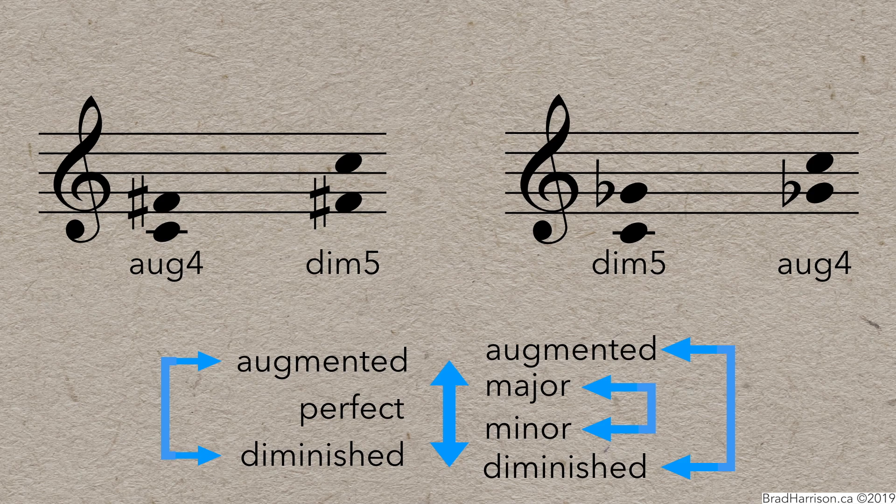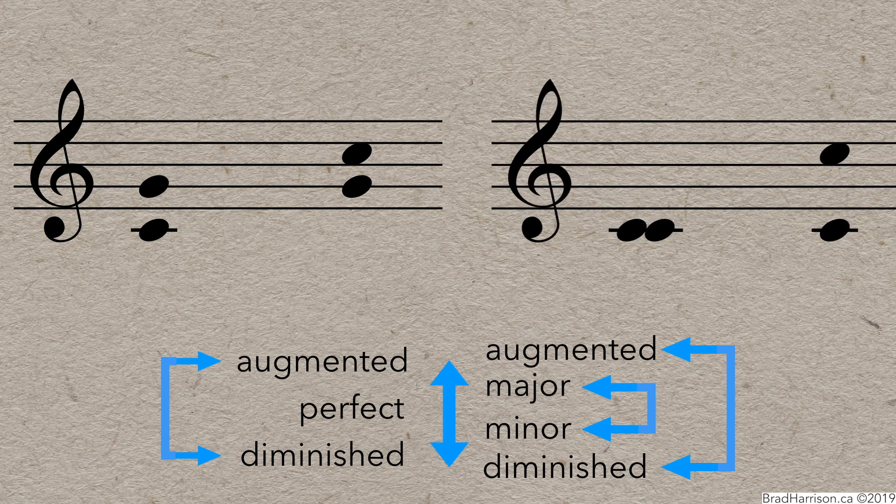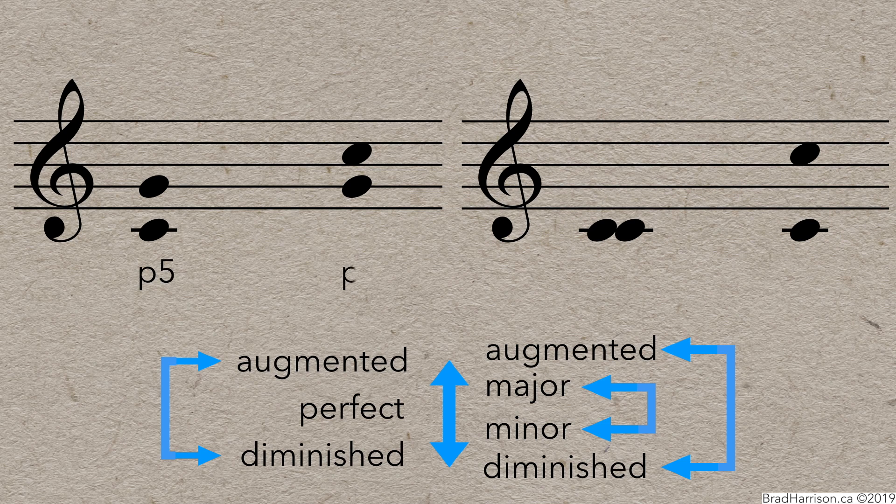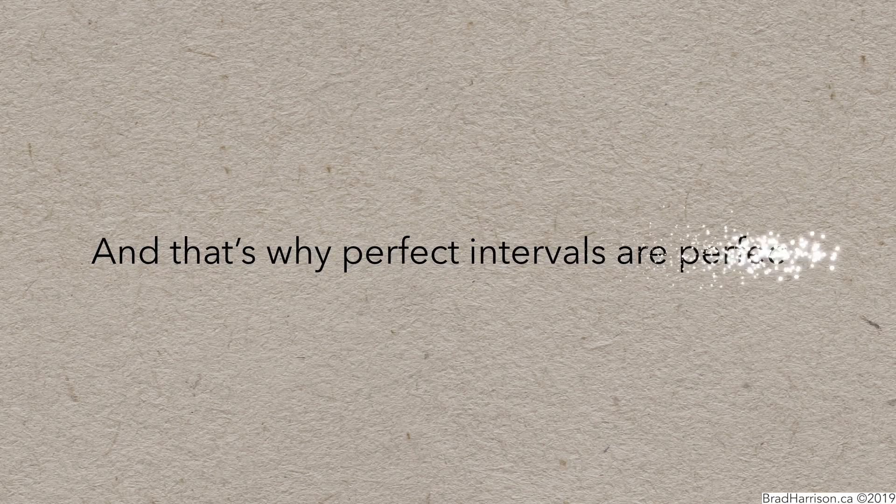But, perfect intervals are interesting. If you invert a regular old perfect interval, they're still perfect. C to G is a perfect 5th, and inverts to a perfect 4th. The values of the interval will still add to 9, but the quality doesn't change. Same for the perfect unison. It inverts to a perfect octave. And that's why perfect intervals are perfect.